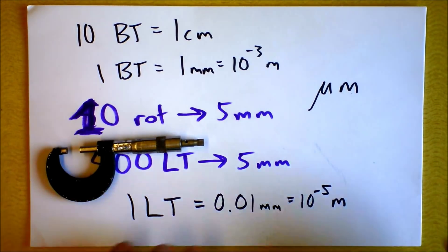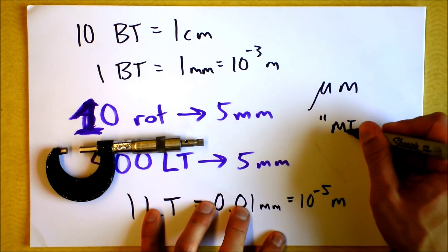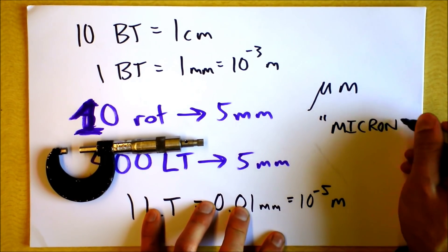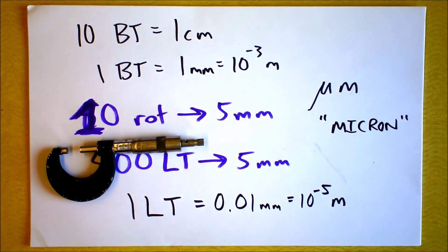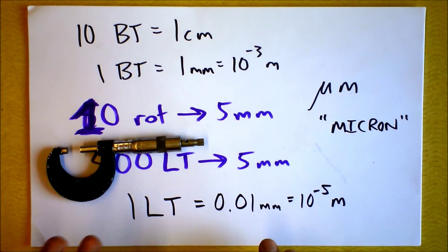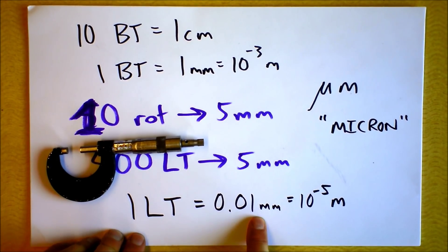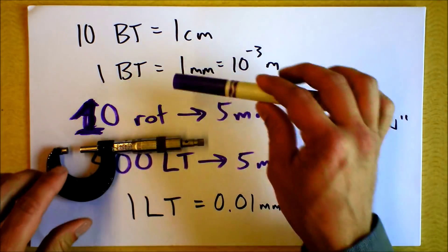They even call it a micron. You want to call this a micron? Yes, this is accurate to one micron. So here's what I'm going to do. I know that a little tick is that big and I'm going to measure the first thing that comes to mind. It's a purple marker.